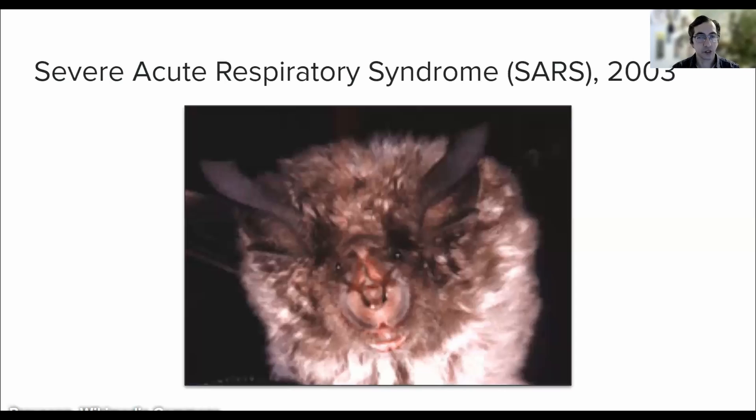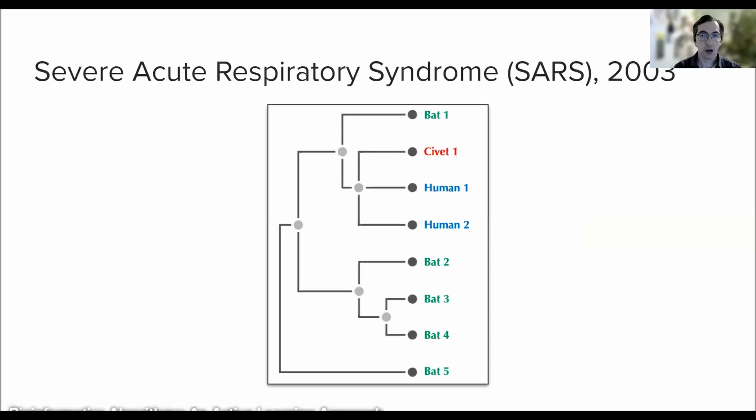At this stage of the SARS outbreak, both direct zoonotic transfer hypothesis and the intermediate host hypothesis were plausible. However, as biologists gathered more data and eventually constructed the evolutionary tree of coronaviruses from bats, civets, and humans, they found strong evidence that civets were indeed intermediaries between bats and humans.